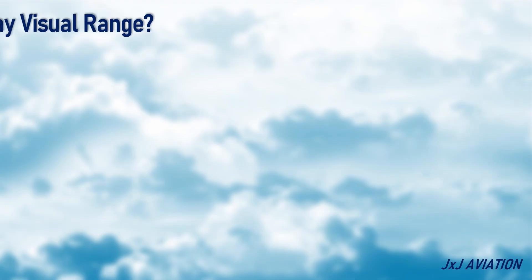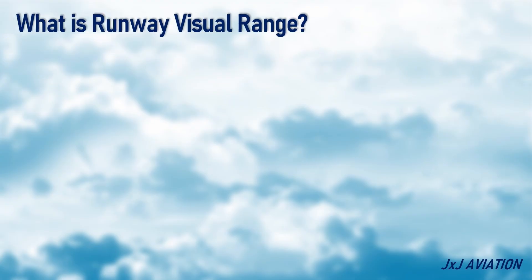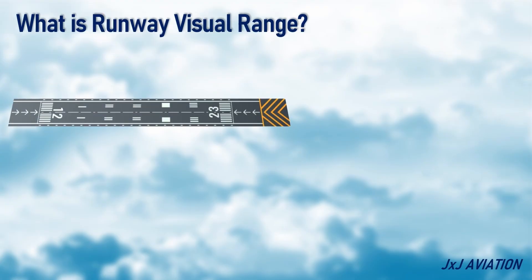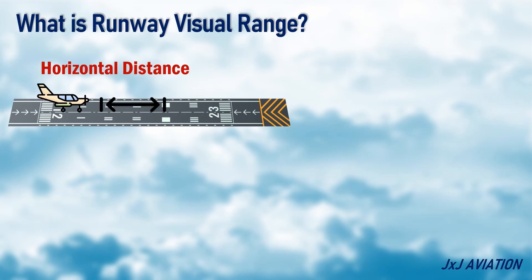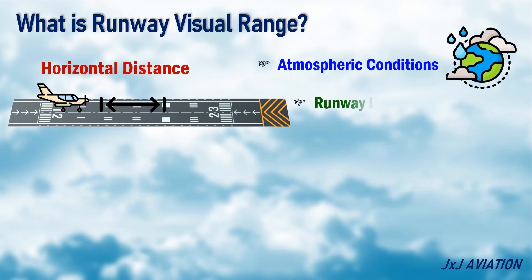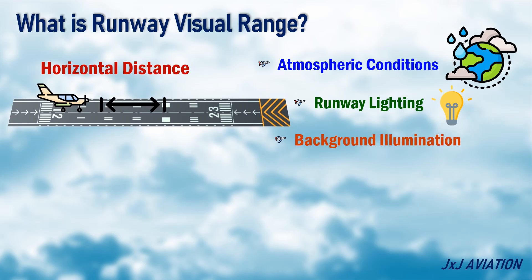First, let's look at what is runway visual range. Runway visual range, or RVR, is defined as the horizontal distance a pilot can see on a runway. RVR is determined by atmospheric conditions, the runway lighting, and background illumination.